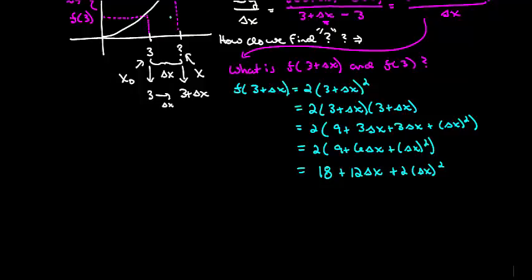Now we need f at 3. Let's grab green here, make it a different color. So 2 times, again, plug in 3. So 2 times 3 squared. That's going to be 2 times 9 which we figured out in the last videos was 18.